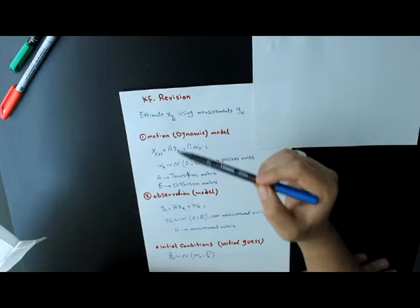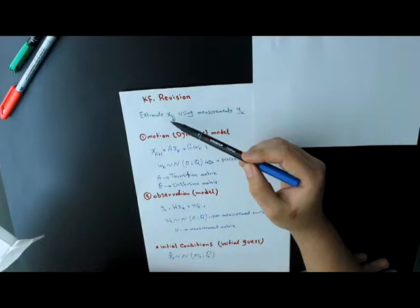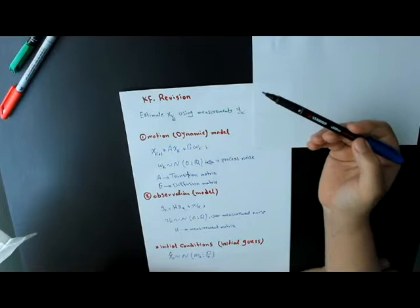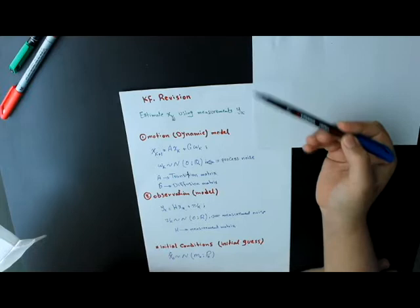I will use some measurements from sensors. These measurements or the sensors can be GPS, can be lidar, can be radar, can be camera, or any other sensor. In order to use Kalman filter, we need two kinds of models.